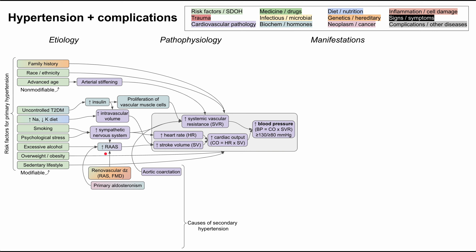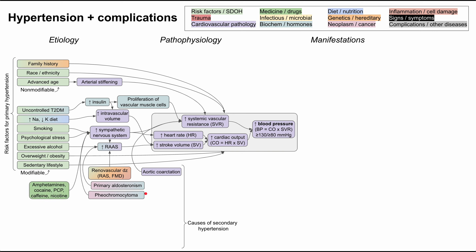Primary aldosteronism, also called Conn syndrome, is a tumor that produces aldosterone, stimulating the rest of the RAS pathway. A pheochromocytoma is a tumor that stimulates the sympathetic nervous system by producing large amounts of epinephrine and norepinephrine, increasing blood pressure through that mechanism. Drugs and substances — including amphetamines, cocaine, PCP, caffeine, and nicotine — can all stimulate the sympathetic nervous system and increase blood pressure.